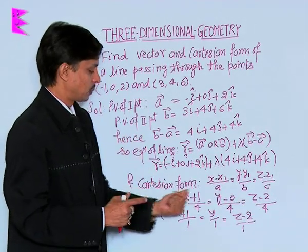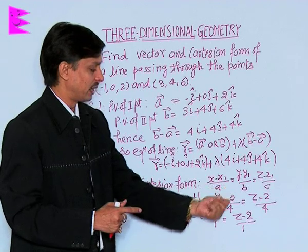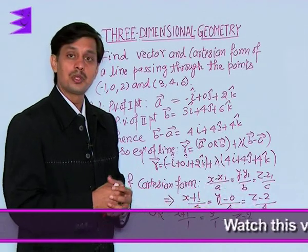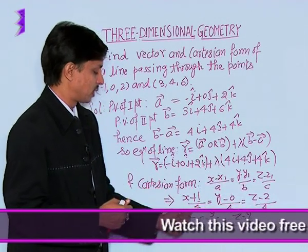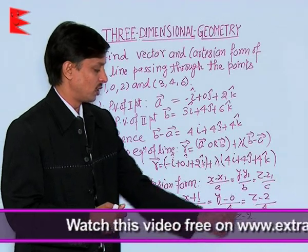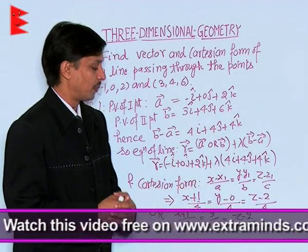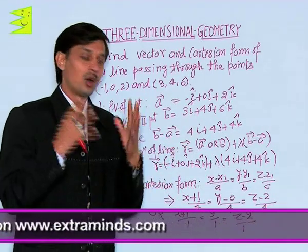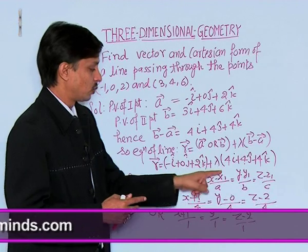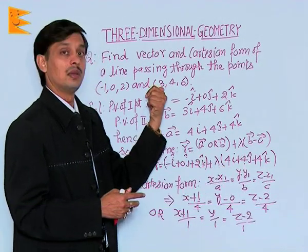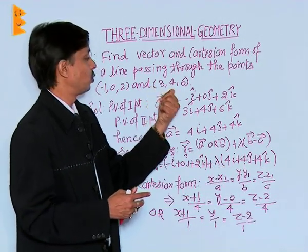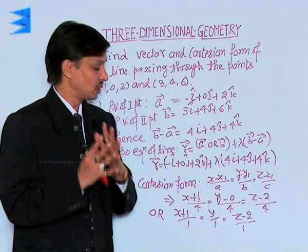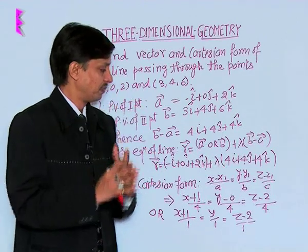So, the Cartesian form is: (X+1)/4 = Y/4 = (Z-2)/4. Simplified by dividing through by 4: (X+1)/1 = Y/1 = (Z-2)/1. This is the Cartesian form. Always remember that X1, Y1, Z1 can also be replaced by X2, Y2, Z2 — the answer will remain the same, as both situations give the equation of the same line.